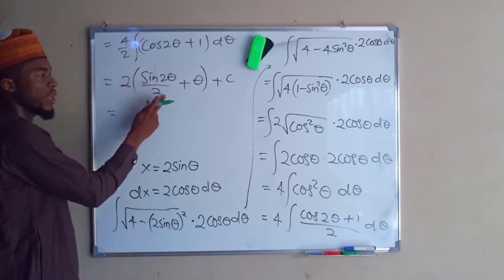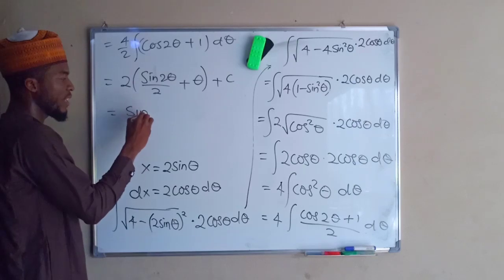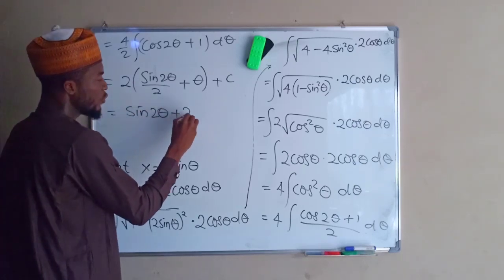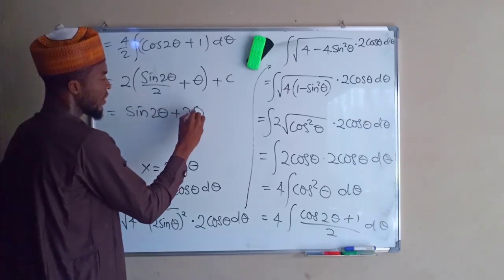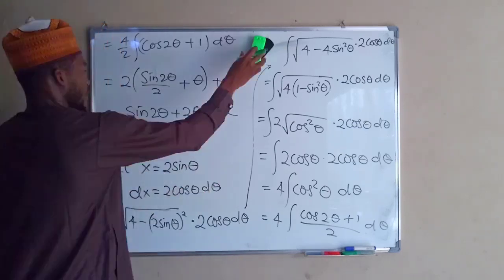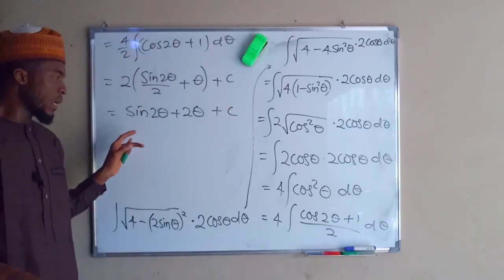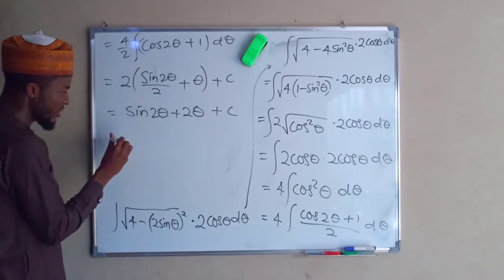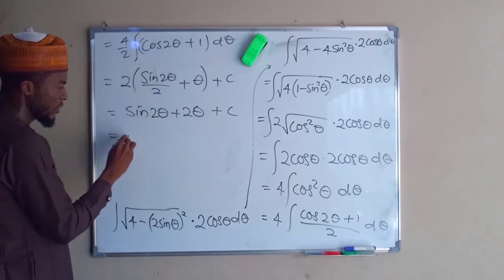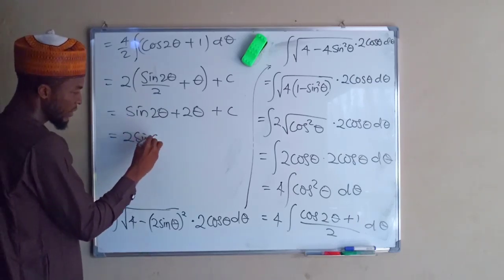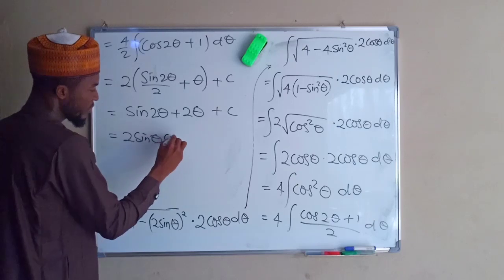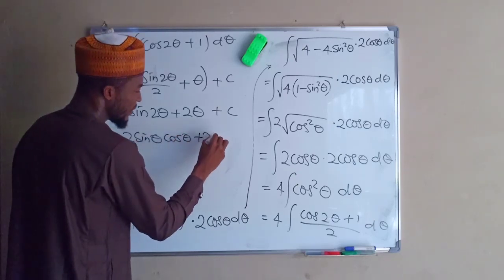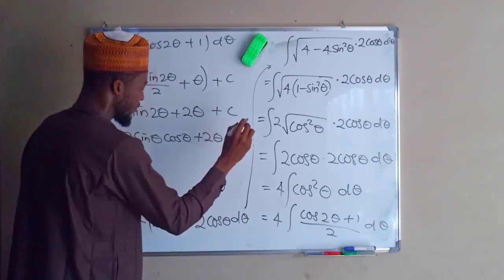Expanding the bracket, the 2 and the 1/2 cancel, so we have sin 2theta plus 2theta plus c. From the sine double angle identity, sin 2theta can be written as 2 sin theta cos theta, giving us 2 sin theta cos theta plus 2 theta plus c.